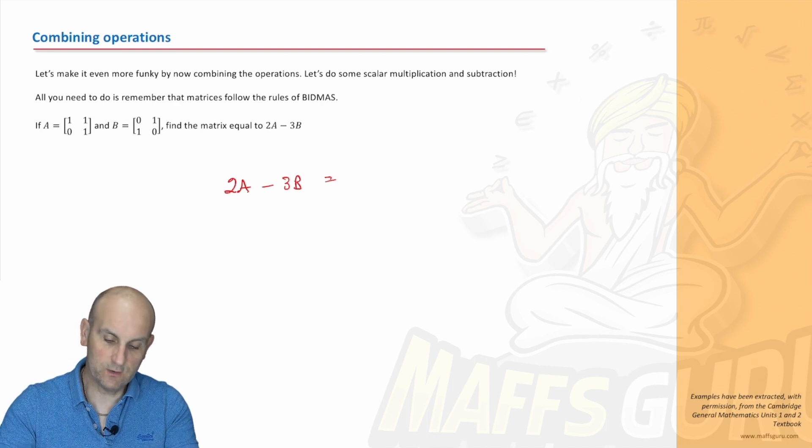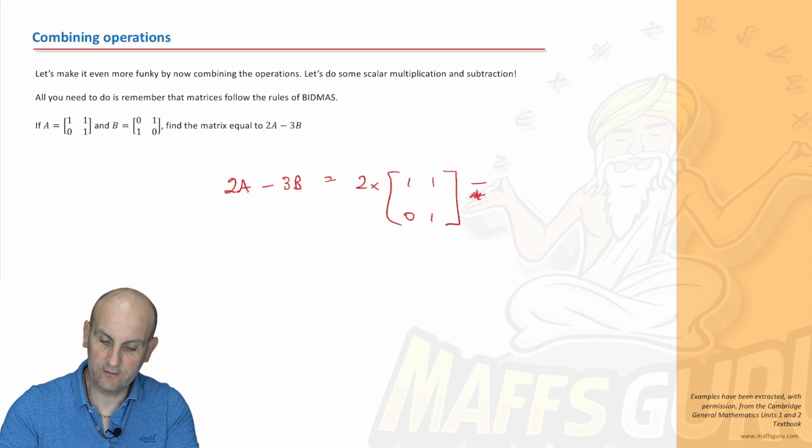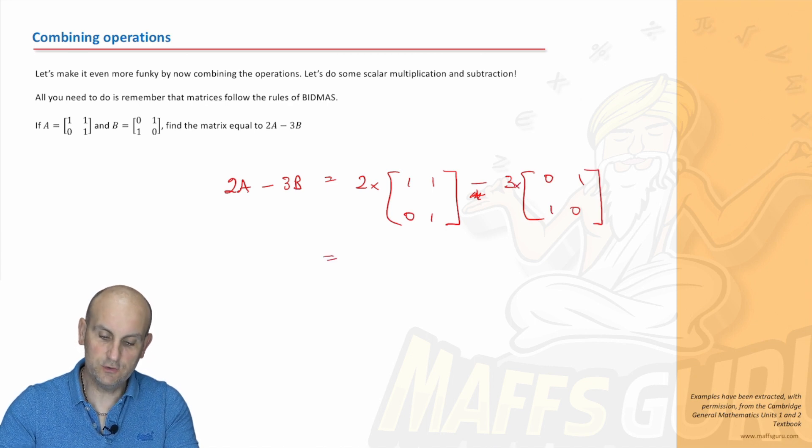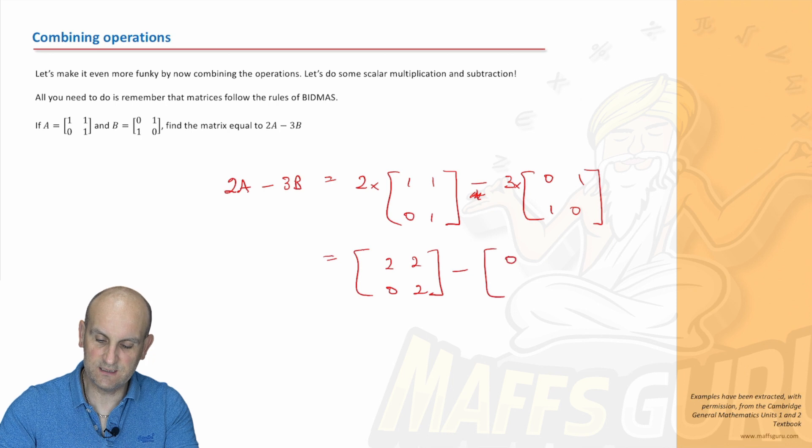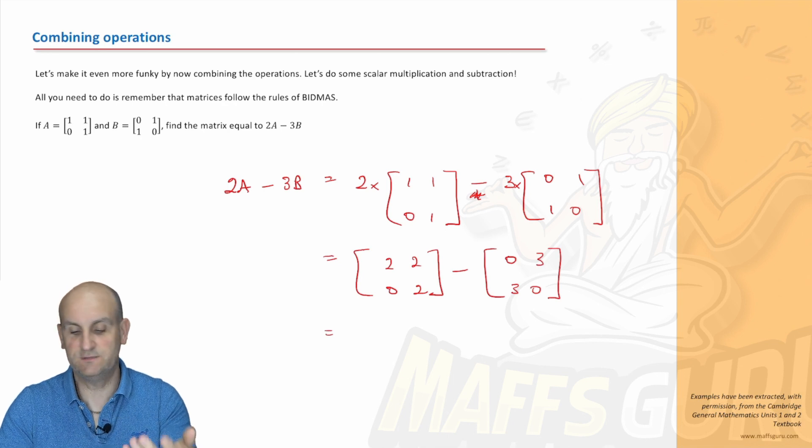Now write this out as if it was an actual sum. That's my advice to you. So I'm going to write 2 times, what was A? 1, 1, 0, 1. And I'm going to subtract 3 lots of B, which is 0, 1, 1, and 0. Okie dokie. So I'm going to multiply it. 2 lots of that gives me 2, 2, 0, and 2. Minus 3 lots of that is going to be 0, 3, 3, and 0. So that's my scalar multiplication done twice.